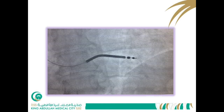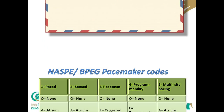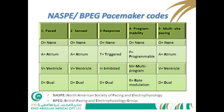The next important topic is pacemaker codes. We must know these codes to speak the same language. The code is divided into five letters: the first is the chamber paced, the second is the chamber sensed, the third is the response to sensed myocardial activity, the fourth is programmability, and the fifth is multi-site pacing.